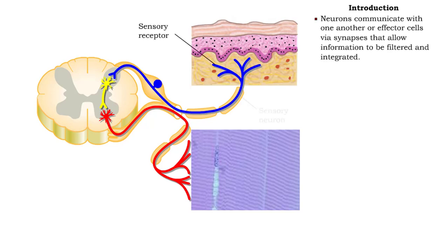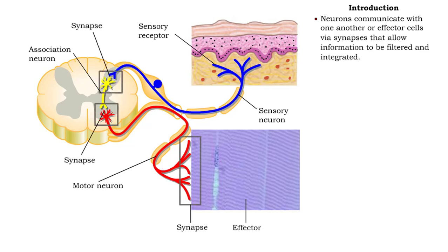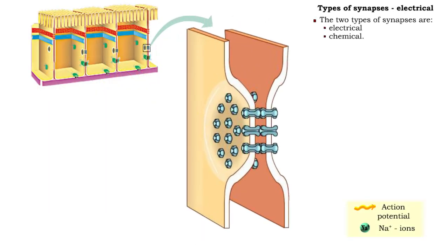In order to provide communication among the cells of the body, the billions of neurons in the nervous system must first communicate with one another or with effector cells via synapses. Synapses allow information to be filtered and integrated. Synapses are either electrical or chemical.